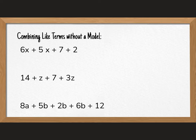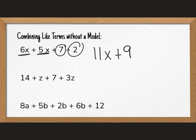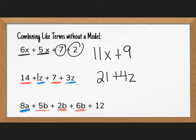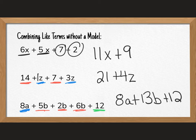Welcome back. Let's go over these three problems. So on this one, you have 6x and 5x, so you should say that was 11x, and then you have plus 7 plus 2, which makes a total of 9. Next, we have 14 and 7, and then we have a z and a 3z. So my 14 plus 7 makes 21. z plus 3z, you've got to remember that z is a 1z, makes 4z. And then on our last one, there's a lot going on. We have 8a, 5b, 2b, and a 6b. So the 8a is just going to stay 8a plus 5b plus 2b is 7b plus the 6b is 13b's plus 12.